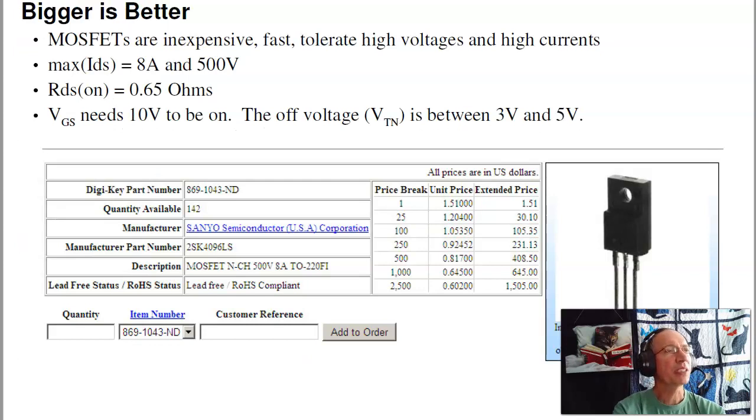If I want to have a switch capable of more current, just use a different MOSFET. For example, if I go back to DigiKey and search, here's a MOSFET that's capable of 8 amps and 500 volts. The on resistance is 0.65 ohms, and it costs $1.51 in quantities of $1.60 in quantities of $2,000.